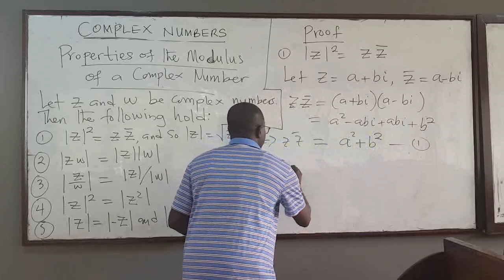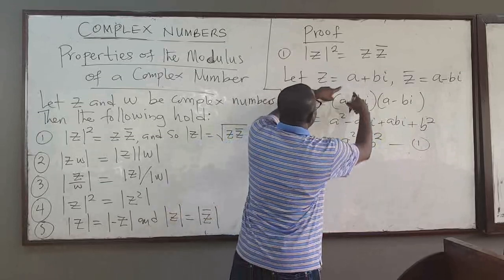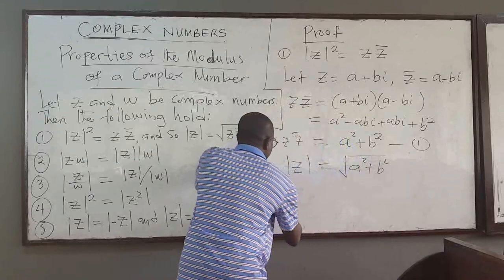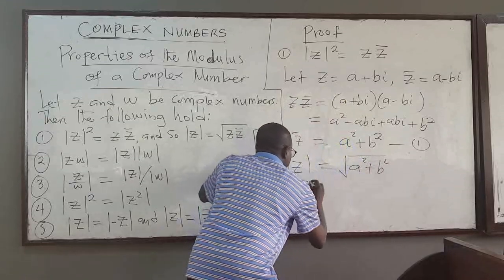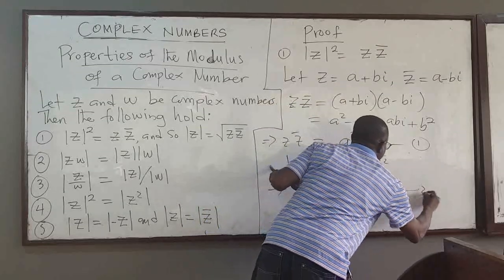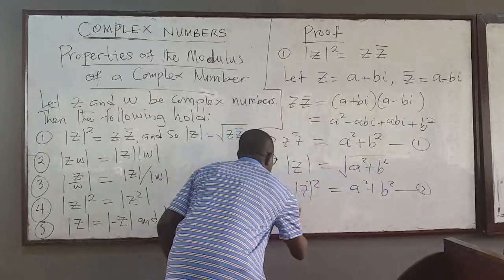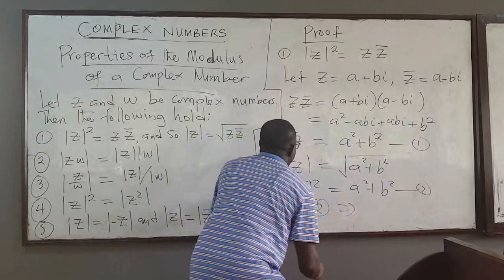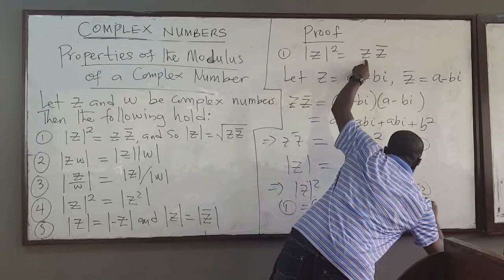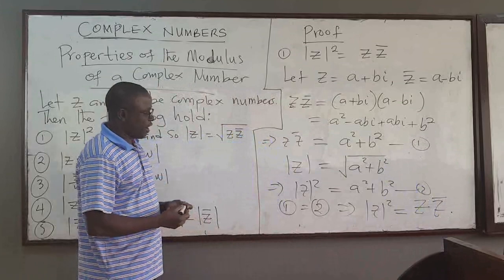Now, what is the modulus of Z? The modulus of Z is equal to the square root of A² + B², which implies that |Z|² equals A² + B². We can see that equation 1 and equation 2 are equal, which implies that |Z|² = Z·Z̄. So we have proven property 1.